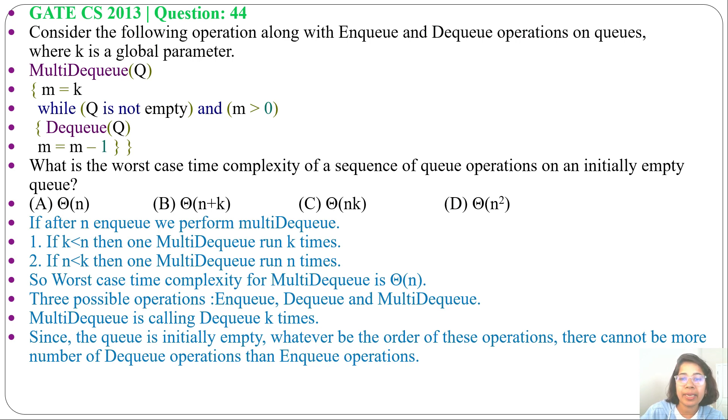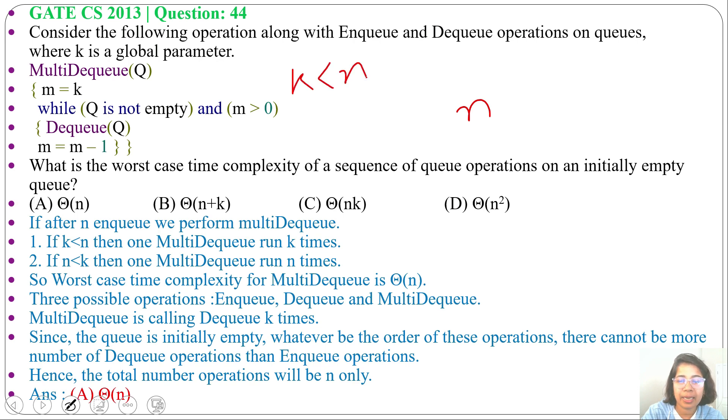there cannot be more number of dequeue operations than enqueue operations. And how many enqueues are we doing? We are doing N enqueues. So that's why in worst case, running time will be theta of N. Suppose we did N enqueues and one multi-dequeue. And suppose K is less than N, then it will be N plus K. Suppose K is greater than N, then N plus N. N plus N will be 2N, it's theta of N.